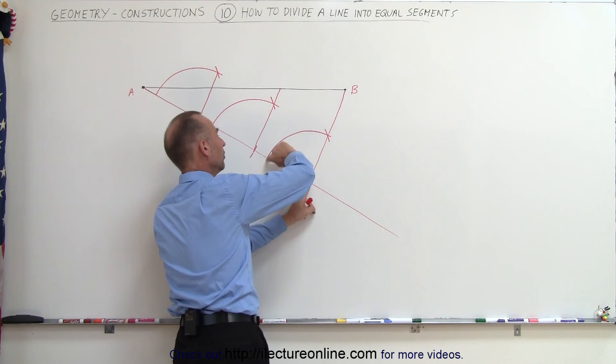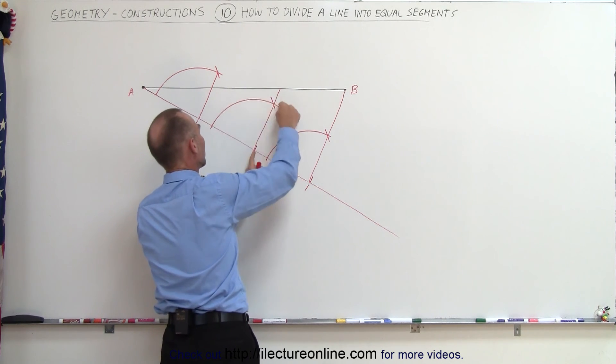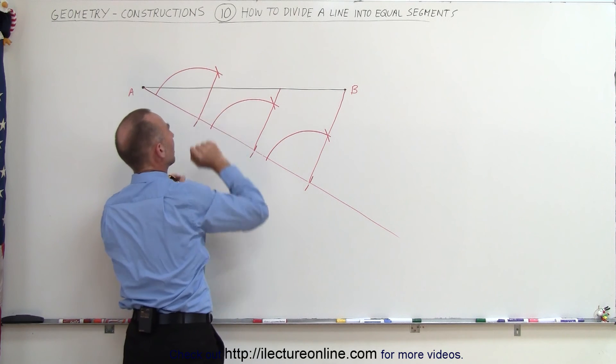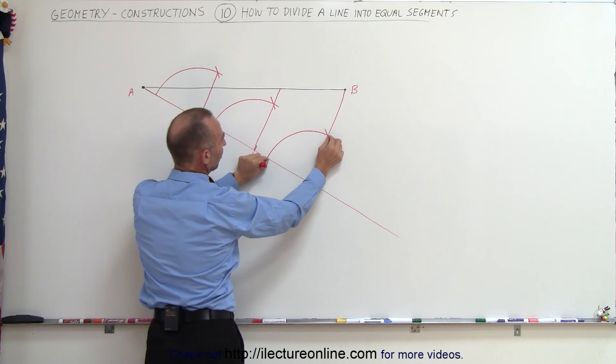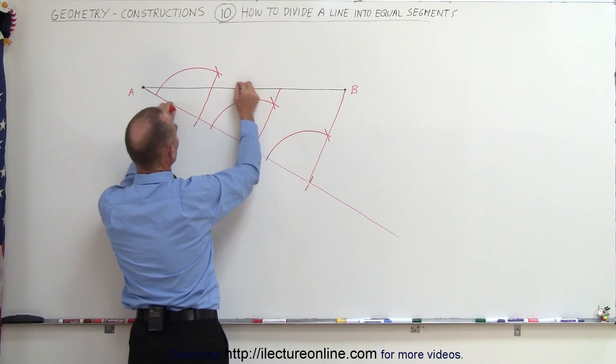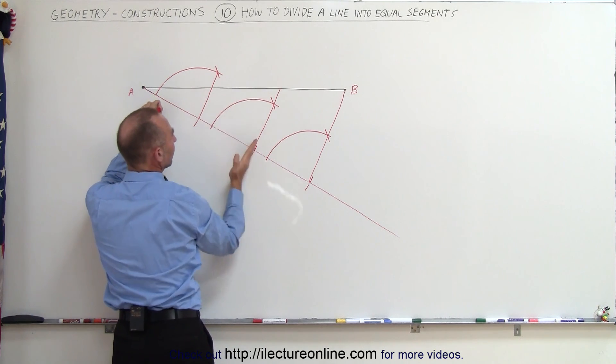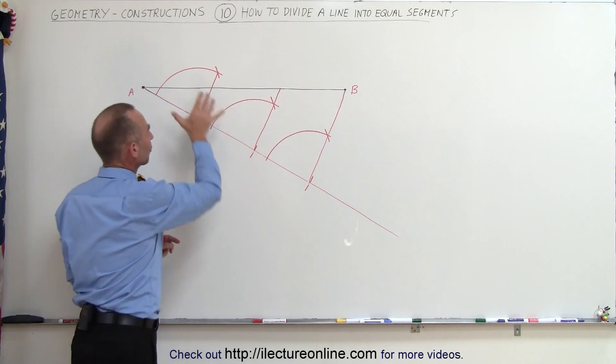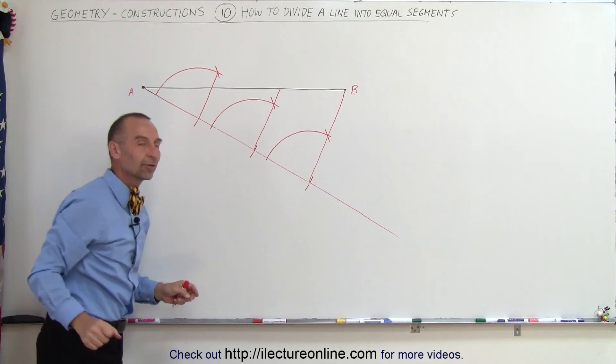Then you draw an arc from this point here, the same distance here, and the same arc here, and then you find how far this is with your compass, and then you duplicate it over here, you duplicate over there, then you connect those lines like that and you have three equal segments on your first line.